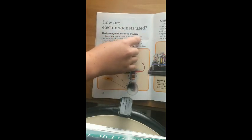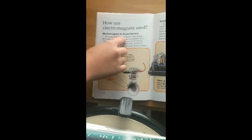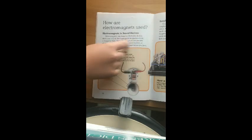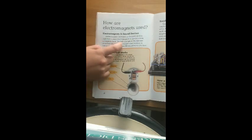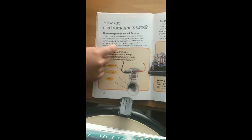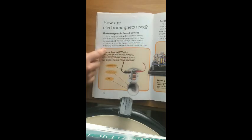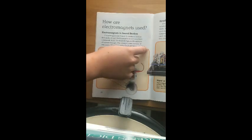How are electromagnets used? Electromagnets in sound devices. Electromagnets are found in electronic devices that make sound. Electromagnets in speakers form a magnetic field. The field changes as the amount of current changes. The changes cause motion or vibrations. Vibrations make the sound waves you hear.